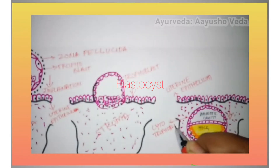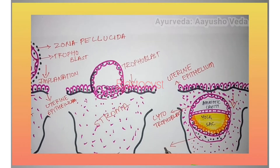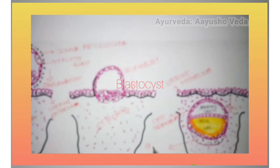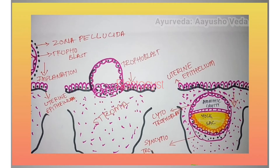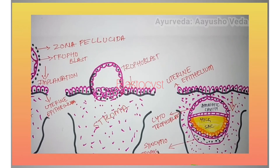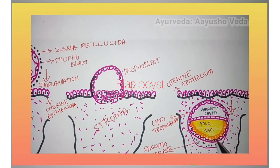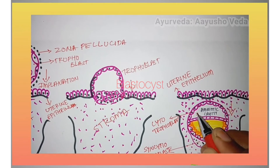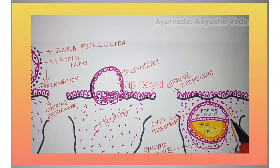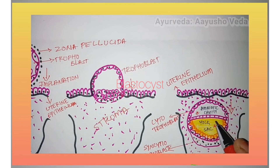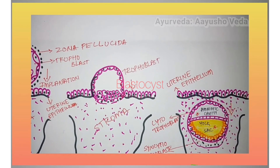After embedding into the endometrium, the trophoblast differentiates into two types: the first is cytotrophoblast and the second is syncytiotrophoblast. There will then be formation of amniotic cavity and yolk sac in the blastocyst, and from this point the development of the embryo and placenta will start.